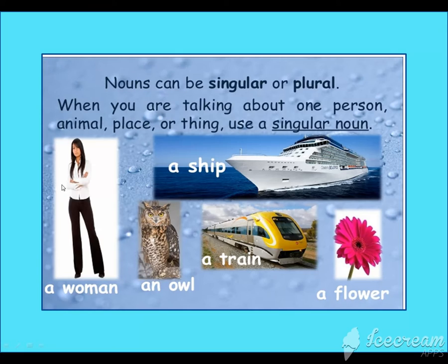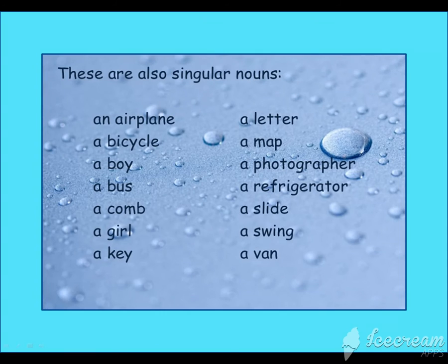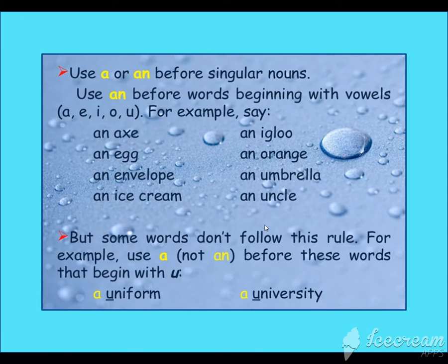Now let's look at nouns. A noun can be singular or plural. Examples of singular nouns include: an airplane, a bicycle, a boy, a bus, a girl, a key, a letter, a map, a photographer, a refrigerator, a slide, a swing, or a van. We use 'a' or 'an' before a singular noun.